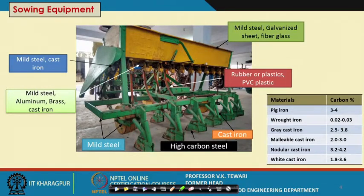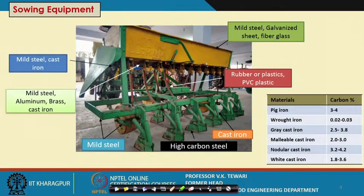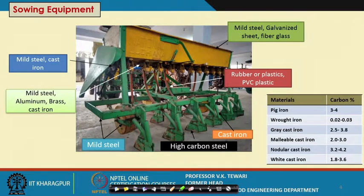We will talk of these materials with respect to what metallurgy tells us — specifically the carbon content, which is the important parameter giving strength to the material. Pig iron has about 3 to 4 percent carbon; wrought iron has 0.02 to 0.03 percent; grey cast iron has 2.5 to 3.8 percent; malleable cast iron has 2.0 to 3.0 percent; nodular cast iron has 3.2 to 4.2 percent; and white cast iron has 1.8 to 3.6 percent. This knowledge is essential not only for agricultural machinery but also for food processing equipment and other applications.